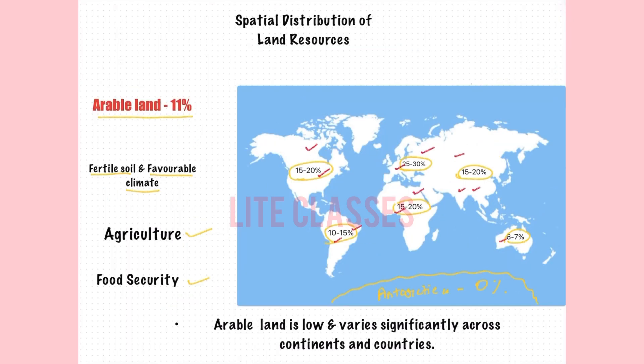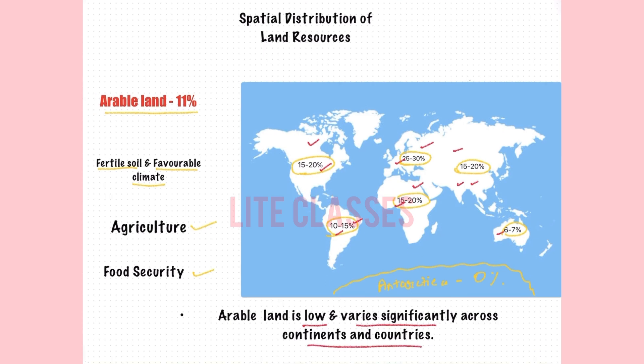So another feature of land resource distribution is that arable land across the world is low and varies significantly across continents and countries, posing a challenge for food security, the environment, and development.